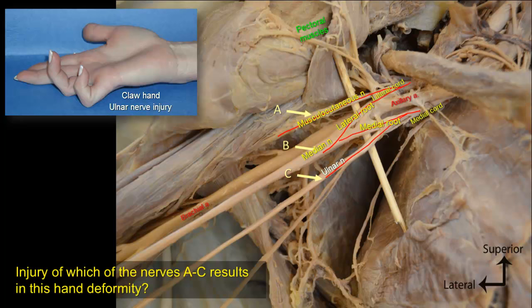Here is the letter M configuration, and now we can sort out the branches A, B, and C. A is the musculocutaneous nerve, B is the median nerve, and C is the ulnar nerve. So it is injury of nerve C, the ulnar nerve, that is responsible for this claw-hand deformity.